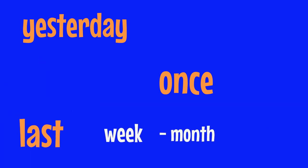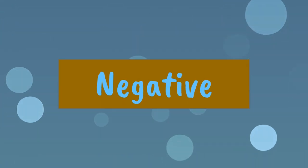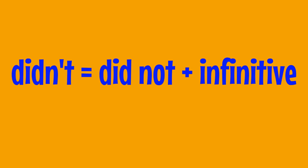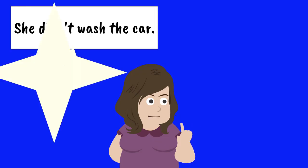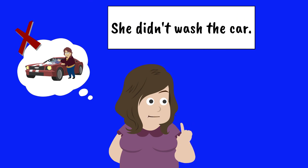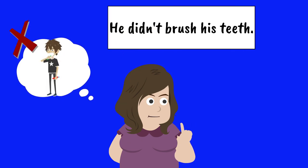Yesterday. Once. Last week, month, year. Negative: didn't equals did not plus infinitive. She didn't wash the car. He didn't brush his teeth.